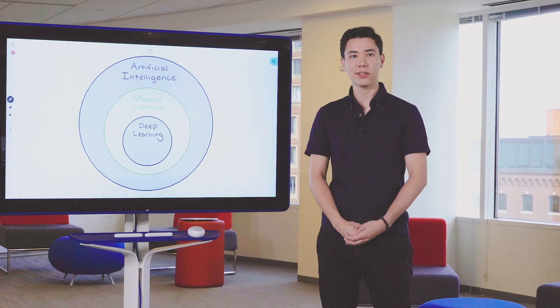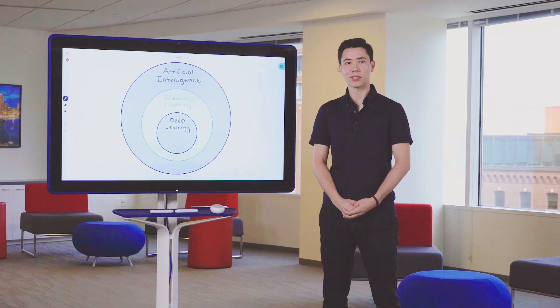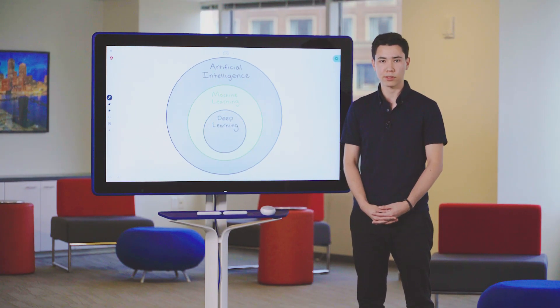To put it simply, a machine learning algorithm, aka a model, uses historical data to uncover insights, determine relationships, and make predictions about future trends. Basically, a machine learning model learns from examples.